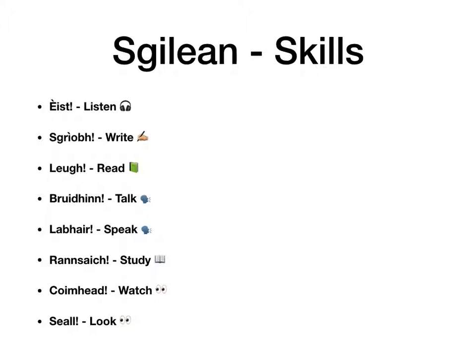Now here are some from the eSkilling. If you've been doing this course from the start, you'll have seen these as orders throughout the course already, so some of these will be quite familiar to you: èisd — listen; sgrìobh — write; leugh — read; bruidhinn — speak; gabh — take; rannsaich — research; cuidich — help; seall — show/look. Say them with me: èisd, sgrìobh, leugh, bruidhinn, gabh, rannsaich, cuidich, seall.